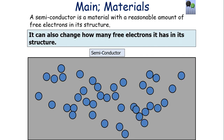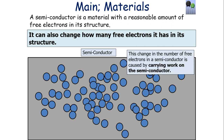A semiconductor is a material with a reasonable amount of free electrons in its structure, but more importantly you can change how many free electrons there are by putting work into or out of the semiconductor — adding energy or removing it.